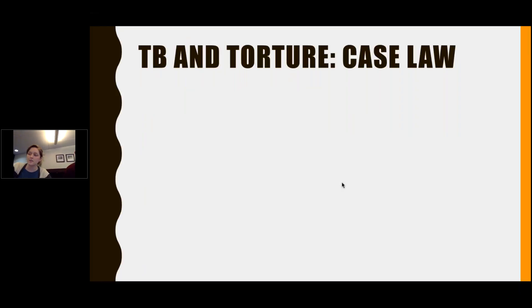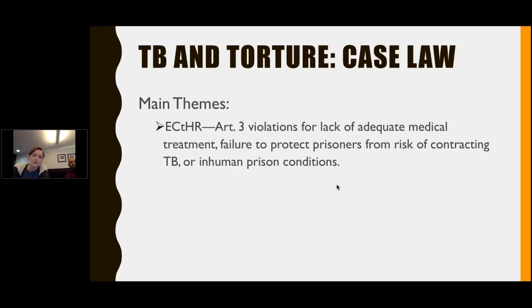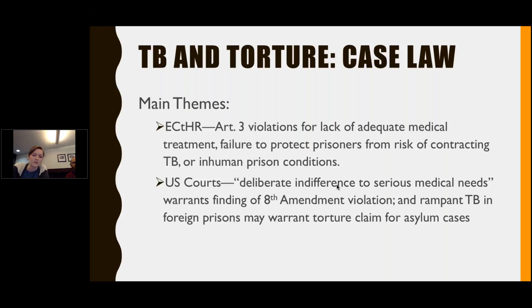We'll now present cases where tuberculosis was central to the legal issue, focusing primarily on the European Court of Human Rights and US courts, where most relevant case law exists. For the European Court, themes include Article III violations for lack of adequate medical treatment, failure to protect prisoners from risk of contracting TB, or inhumane prison conditions. For US courts, themes include deliberate indifference to serious medical needs warranting Eighth Amendment violations, and rampant TB in foreign prisons warranting torture claims in asylum cases.